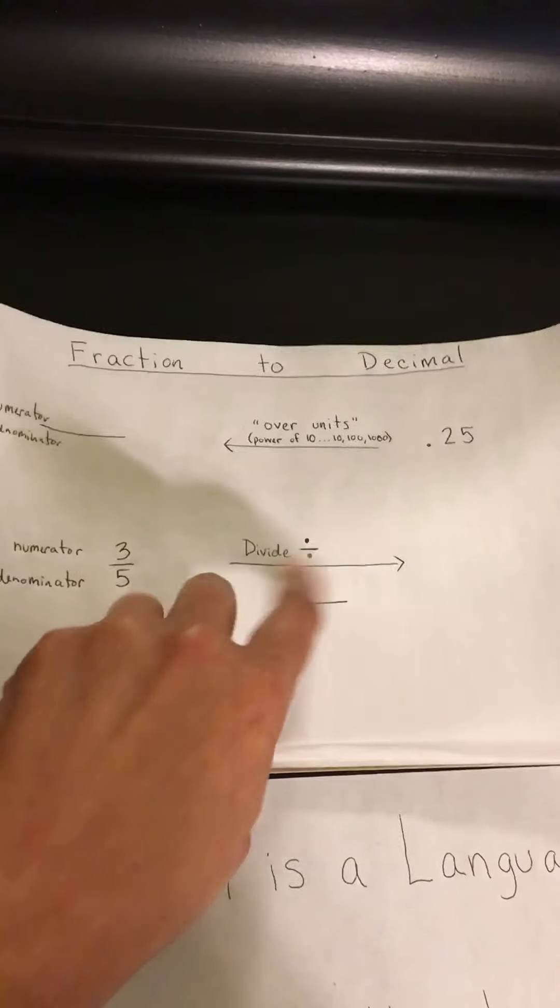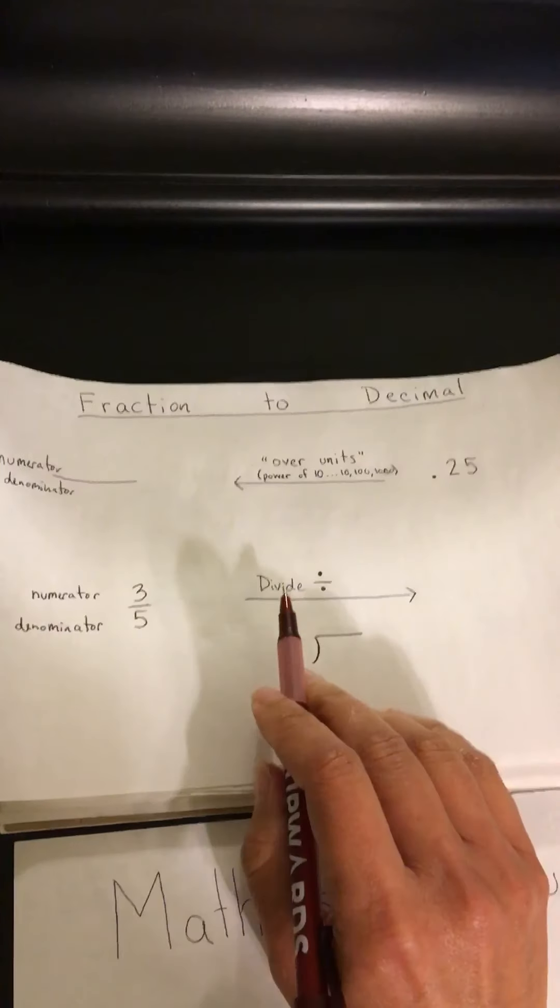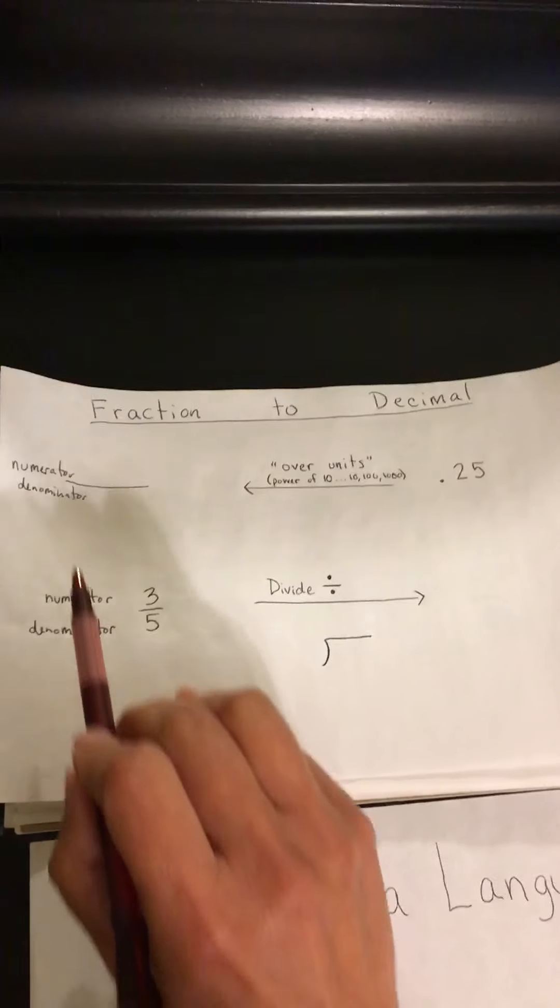Moving from fraction to decimal is very simple. It just has to do with division. So let's talk about terms.